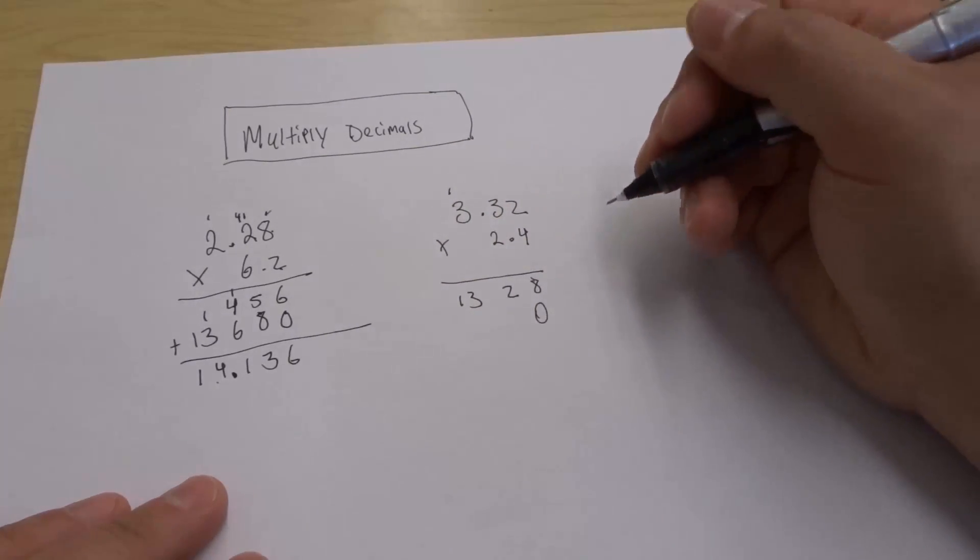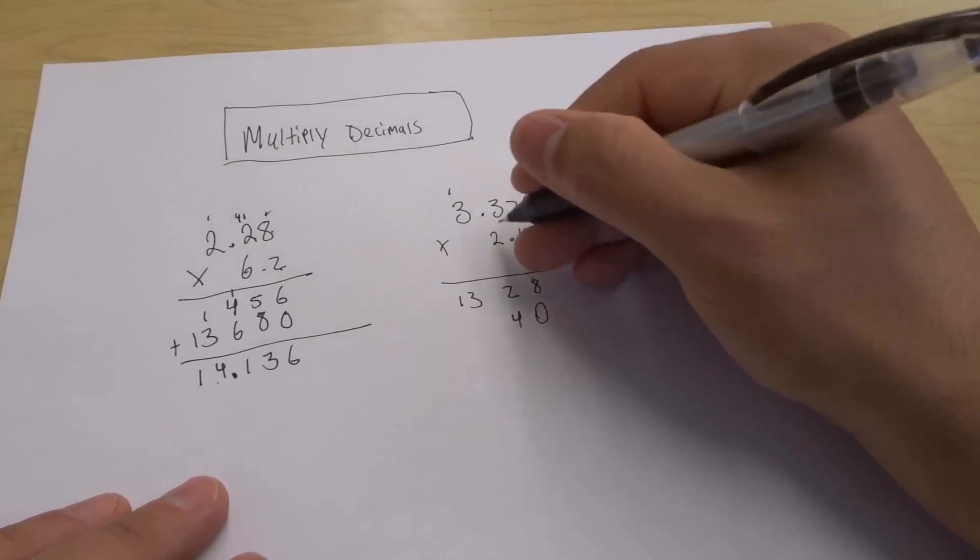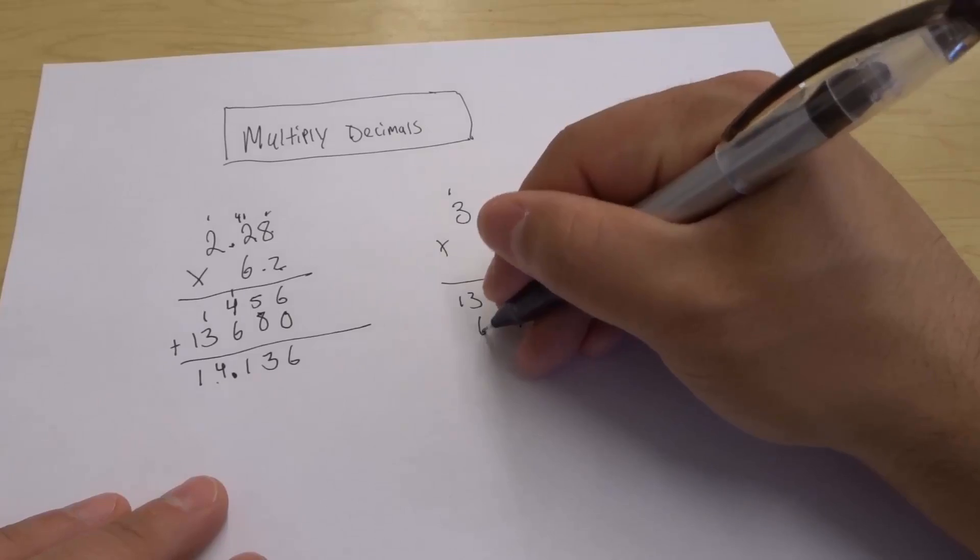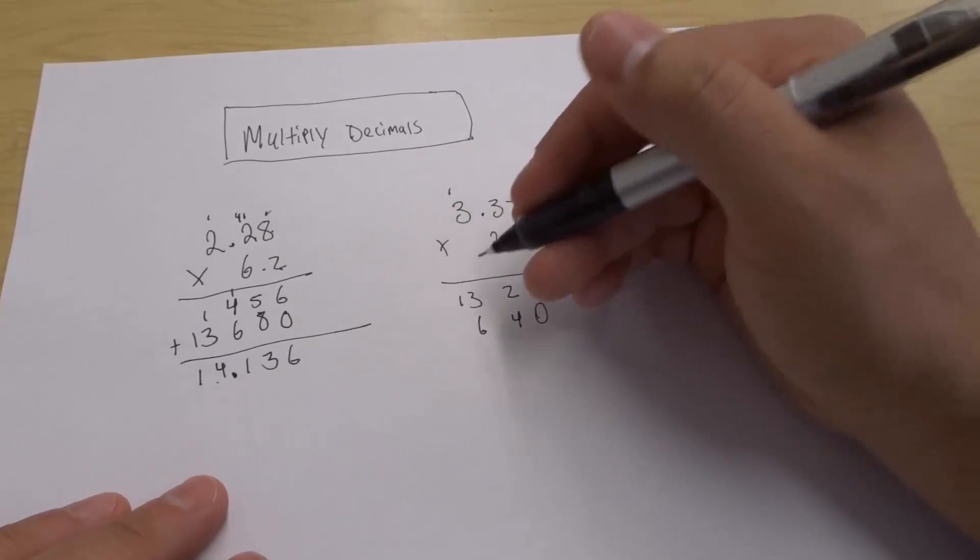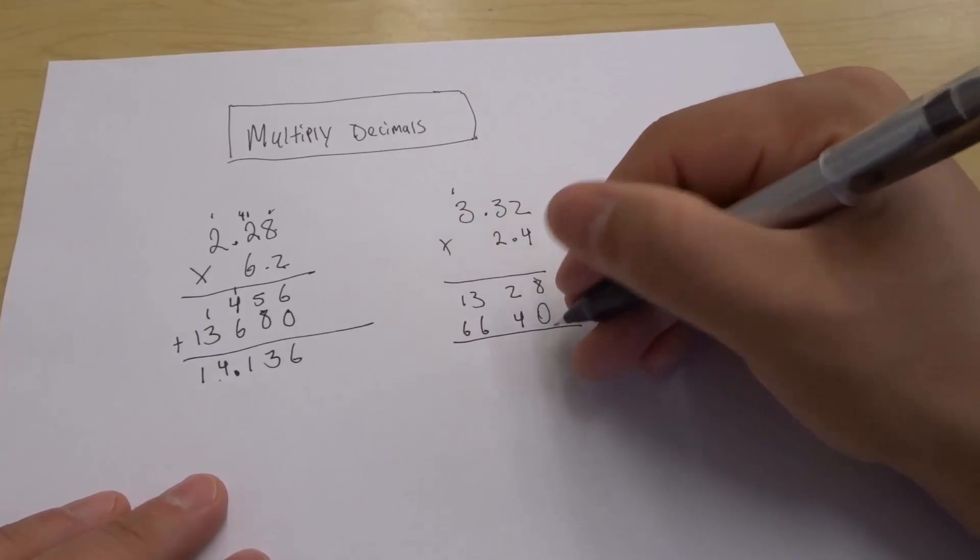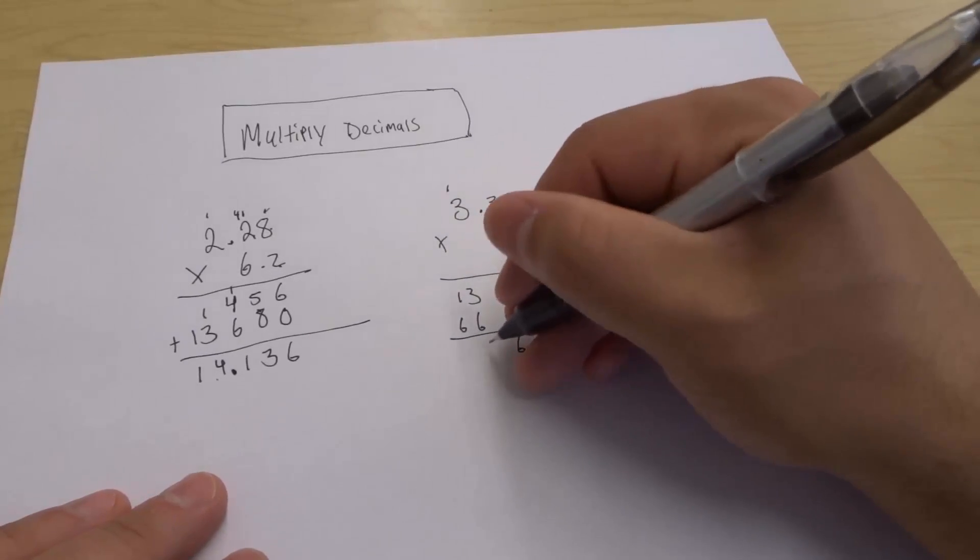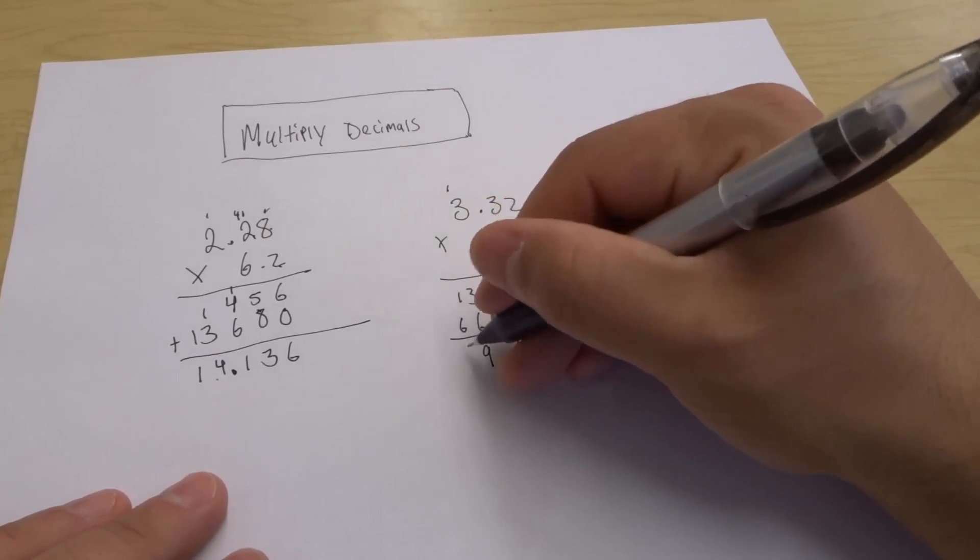Now we start off by adding the 0 right there. 2 times 2 gives us 4, 2 times 3 gives us 6, and 2 times 3 gives us 6 again. Now we add these numbers: 8 plus 0 is 8, 2 plus 4 is 6, 3 plus 6 is 9, 1 plus 6 is 7.